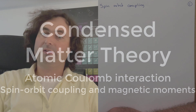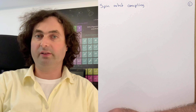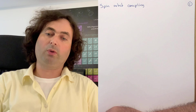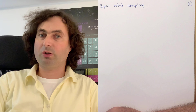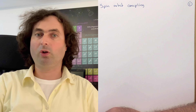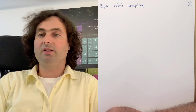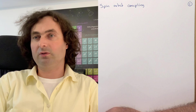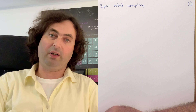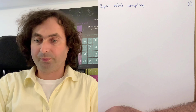Welcome to the next lecture in a series on condensed matter theory. In this video, I want to talk about spin-orbit coupling and how spin-orbit coupling lifts the degeneracy of the atomic terms that we have found due to Coulomb interaction.